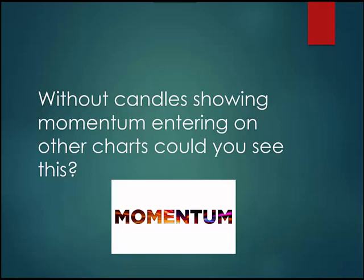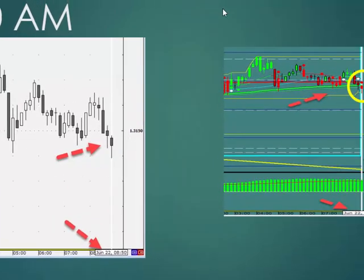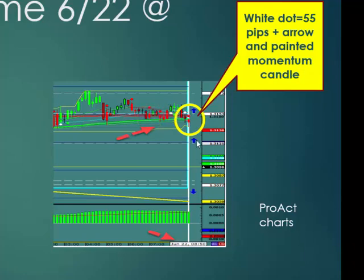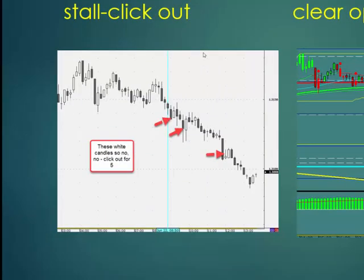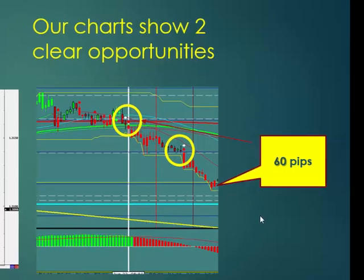Without candles showing momentum entering on other charts, could you see this? Over here on the left, you can see there is a regular old chart — looks pretty blah. The exact same period, June 22nd at 8:50 AM, over here we have a white dot, an arrow, and a painted candle. That's the momentum candle as the market pushes away. As you can see on the other charts they tell you stall out — you're not going anywhere. Over here, what do we get? Two clear entries, both with white dots, both with momentum candles. And that move went 60 pips with two clear opportunities to trade it.